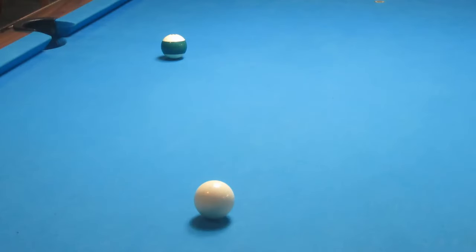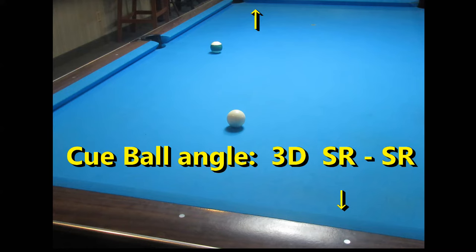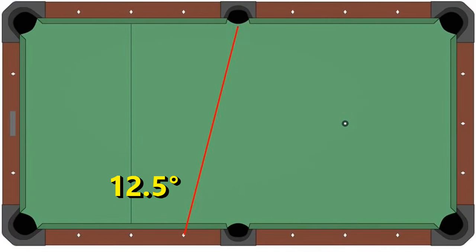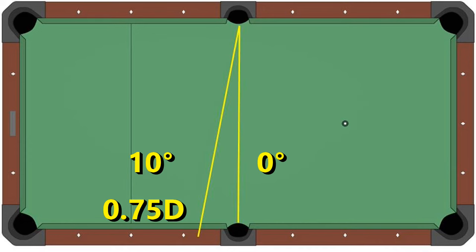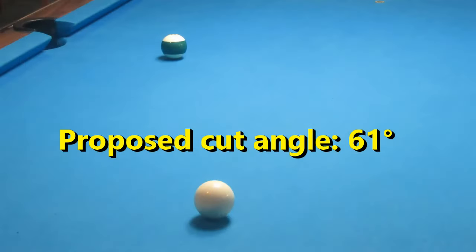Now let's do that same shot to the side pocket. Looks around 61 degrees — let's double-check. Use the diamonds. Since we don't know these angles, we'll do a parallel shift and see the same three-diamond offset. Now get the object ball angle. I'll show you a few object ball angles for the side pocket. We're using the short rail as reference, but parallel shifted to the side pocket to side pocket line. Subtract the angles — it does look like the 61 degrees we estimated, so let's go ahead and shoot it.